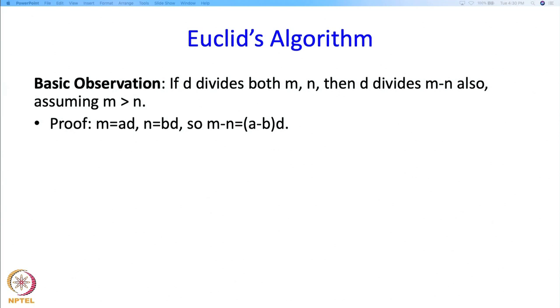Well, the proof is just a single line. Because D divides m, m must be a times d for some a. D divides n, so n must be b times d for some b. So m-n must be a-b times d but that just shows that m-n has d as a factor. Done.